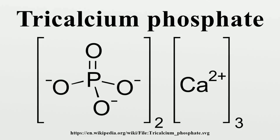Crystalline tri-calcium phosphate can be obtained by calcining the precipitate. Beta Ca3(PO4)2 is generally formed; higher temperatures are required to produce alpha Ca3(PO4)2. An alternative to the wet procedure is to heat a dry mixture of a calcium phosphate and calcium carbonate with an overall Ca:P ratio of 3 to 2. For example: CaCO3 plus Ca2P2O7 yields Ca3(PO4)2 plus CO2.